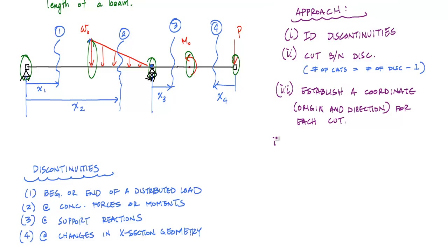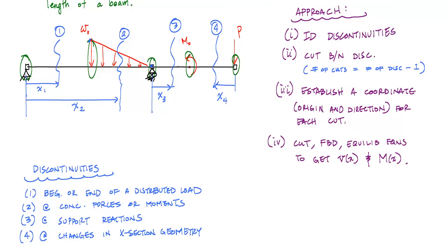If you can set up your coordinate systems correctly, you're about 50 to 60 percent of the way there — the rest is just statics. For each cut, choose everything on the left or everything on the right, draw the free body diagram, apply equilibrium equations, and solve for the shear and moment functions. Hopefully this gives you a good introduction to why we use shear and moment functions and how to determine them.